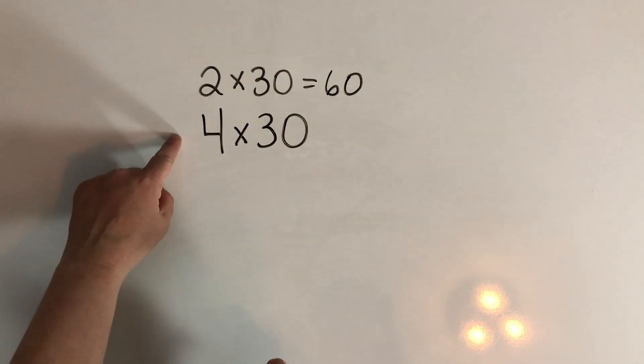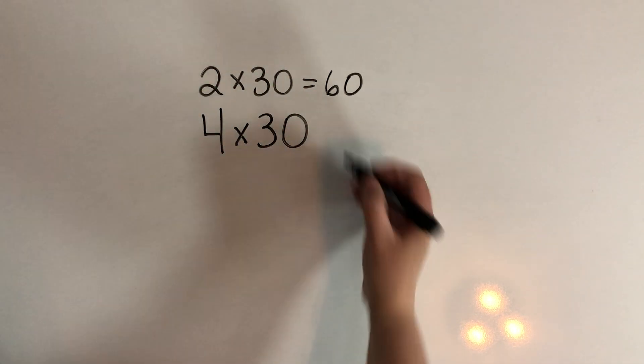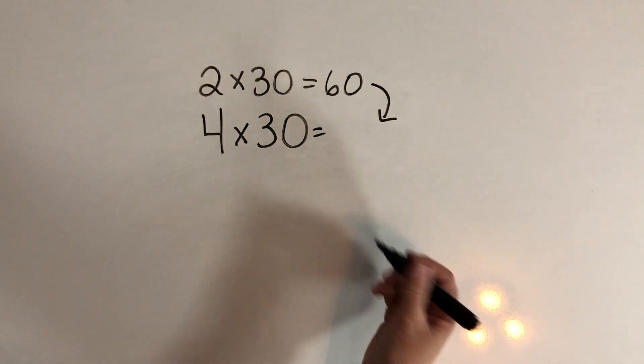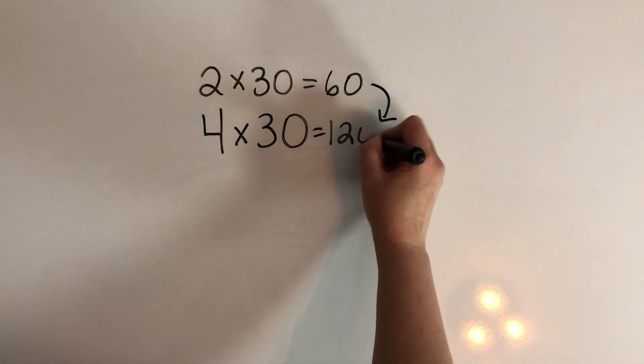So we had two rows, now we have four rows. So we're just doubling the total number of objects. So what's the double of sixty? One hundred twenty.